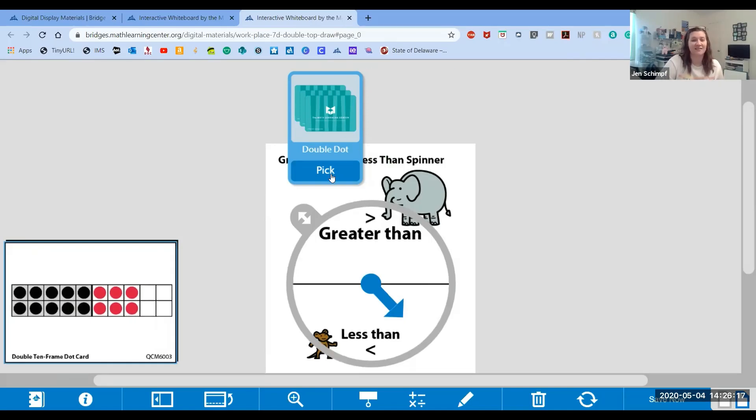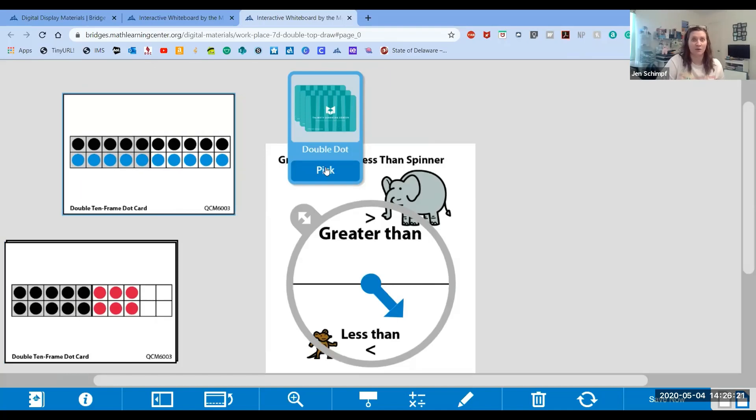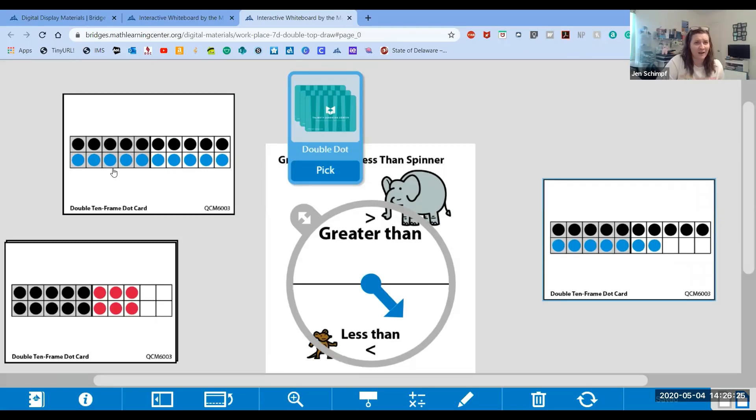Go ahead and pick your next card. I'll move yours right here. And here's mine. How many dots do you have? Yeah, a lot. Let's see, two groups of 10. Good, 20, 10, 20. Or you can count them all up to double check if you want to.